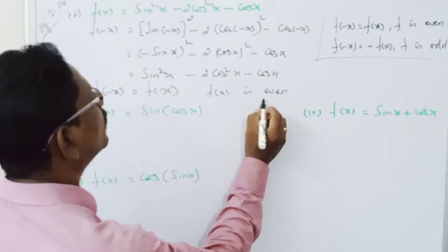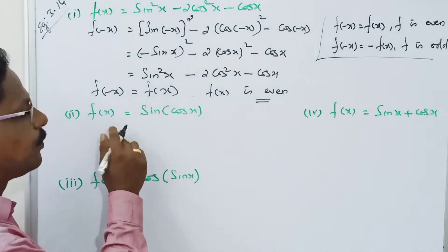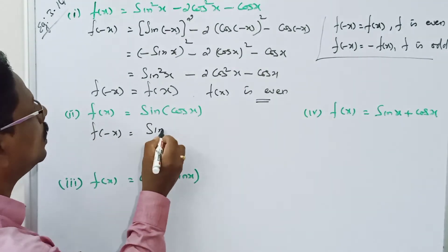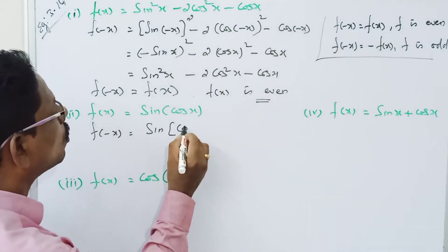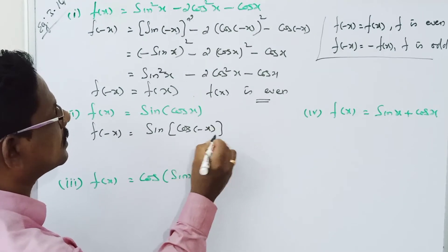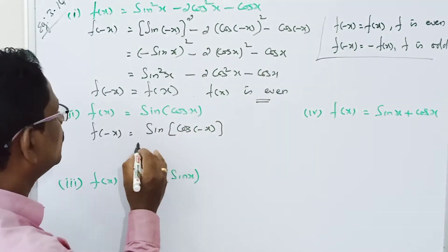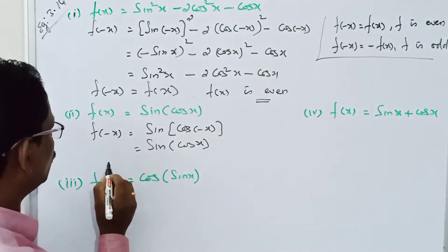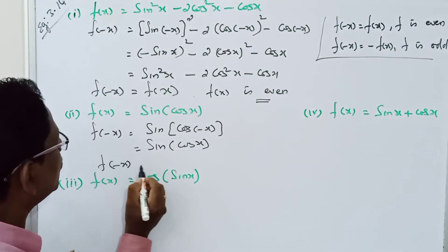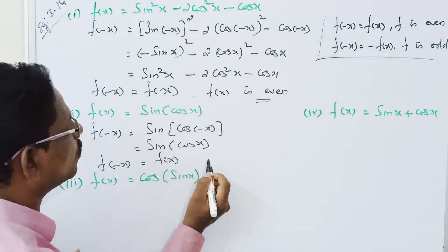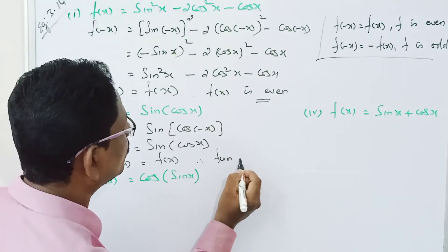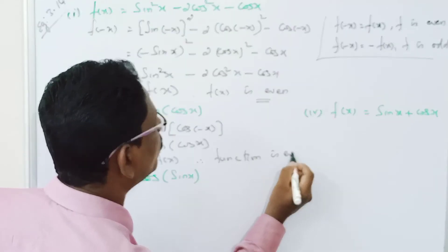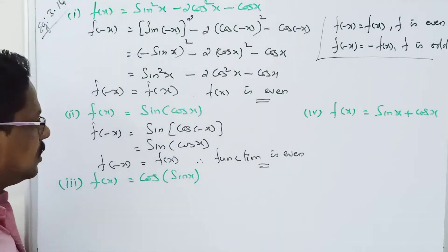Now for the second problem: f of minus x equals sin of cos(minus x). Since cos(minus x) equals cos x, this gives sin of cos x. Therefore f of minus x is equal to f of x, so f of x is an even function.